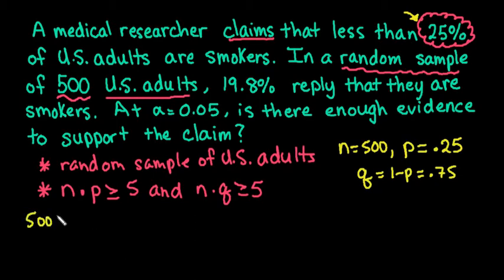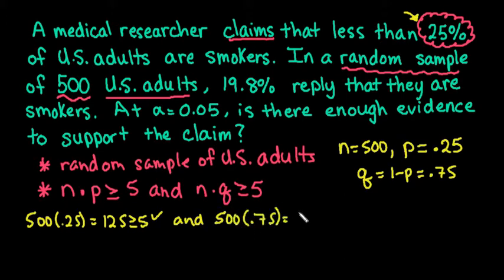If I plug these values in, I would have 500 times 0.25, which is 125, which is greater than or equal to 5. And if I take my n 500 times 0.75, I get 375, which is also greater than or equal to 5. It's really important that you actually show this out and just don't write it down. The only way that your teacher or professor can assess that you checked them is if you write them down.